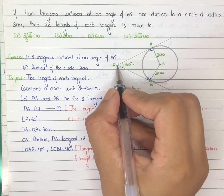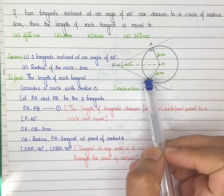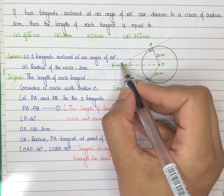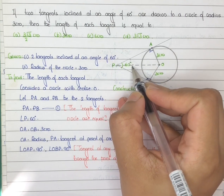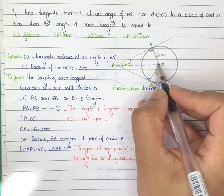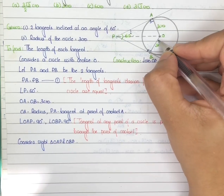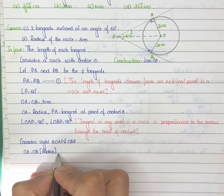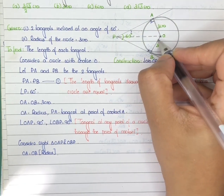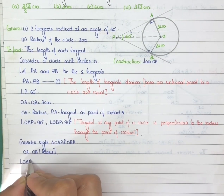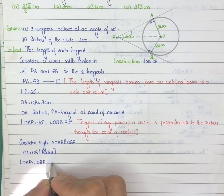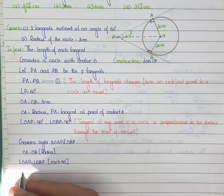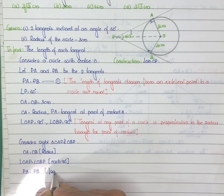Construction: join OP. Now consider right angle triangles OAP and OBP. OA equal to OB, since both are radii of the circle. Angle OAP is equal to angle OBP, each equal to 90 degrees — proved above. PA is equal to PB from equation 1, which gives the length of tangents.